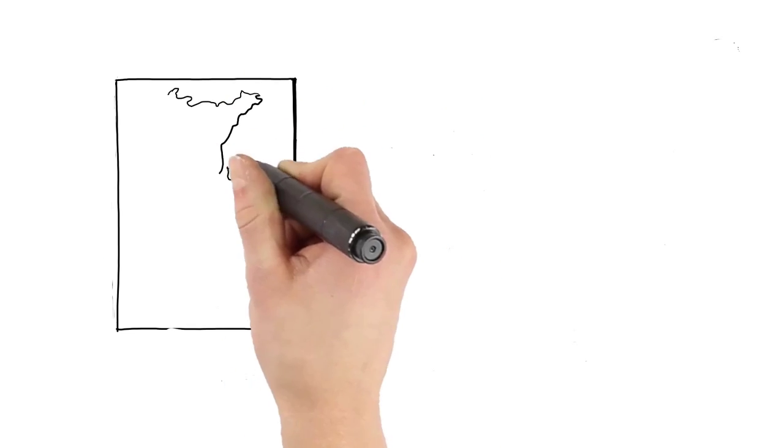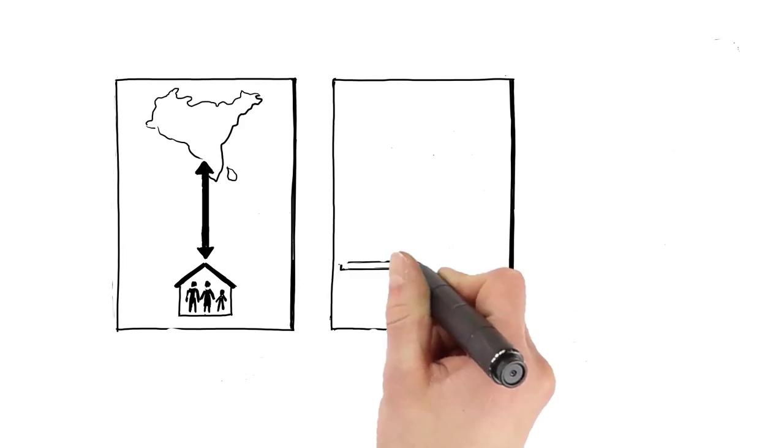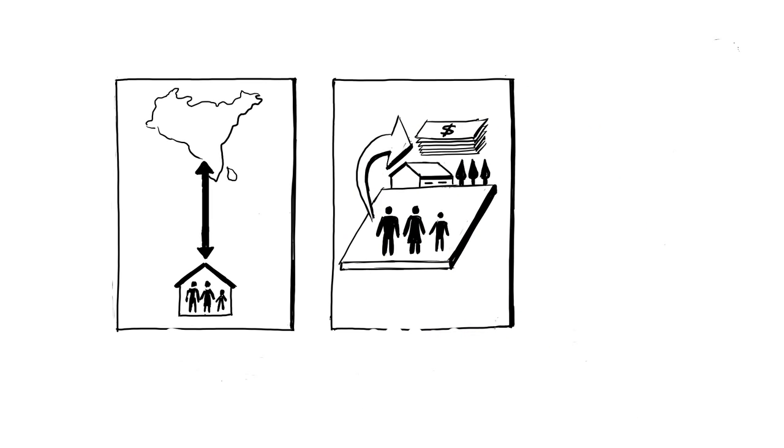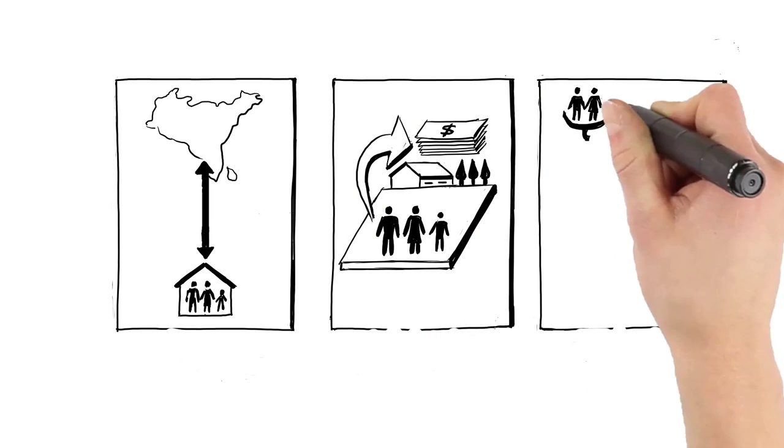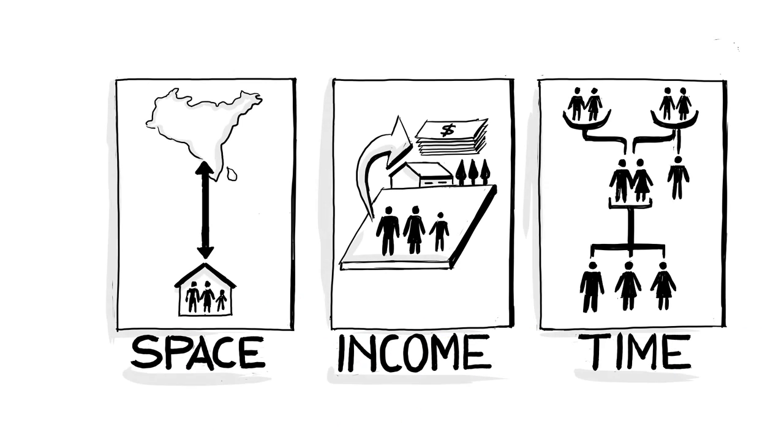Clearly, the challenge is to form a complete picture of which populations continue to lag in terms of access to infrastructure. This is done by analyzing infrastructure access in terms of space, income, and time.